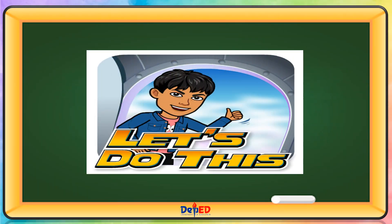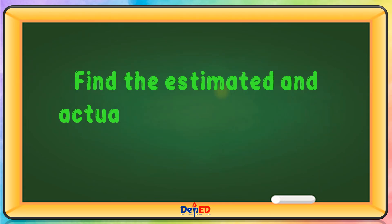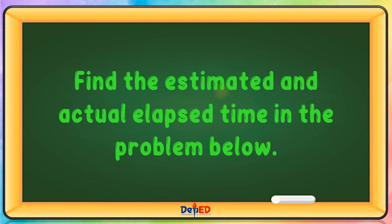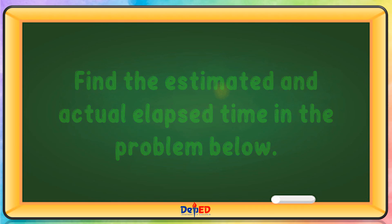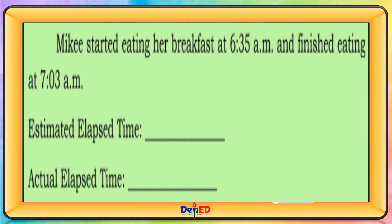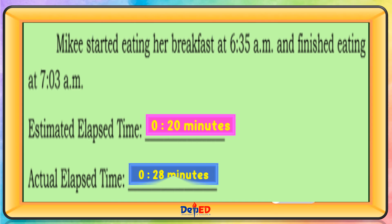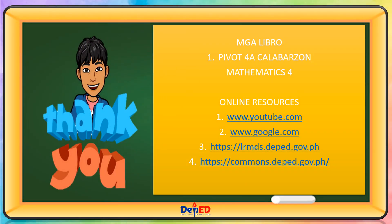Let's do this — find the estimated and actual elapsed time in the problem below. Mikey started eating breakfast at 6:35 a.m. and finished eating at 7:03 a.m. Our estimated elapsed time is 20 minutes and our actual elapsed time is 28 minutes. Thank you for watching. Till our next mathematics lesson — goodbye!